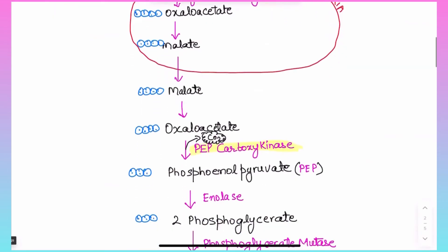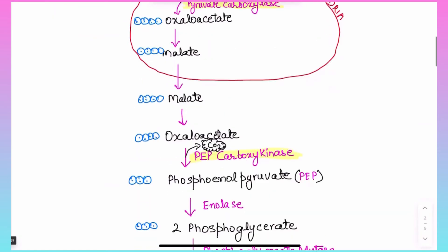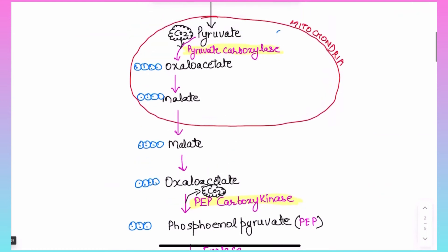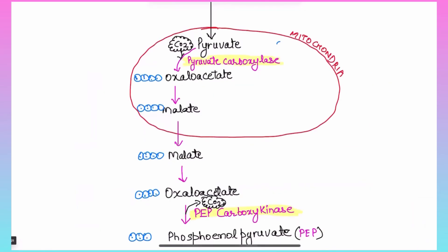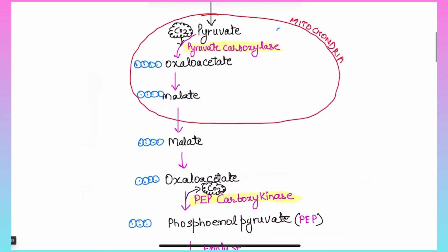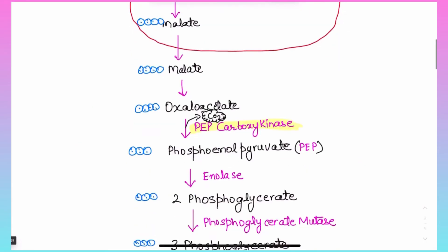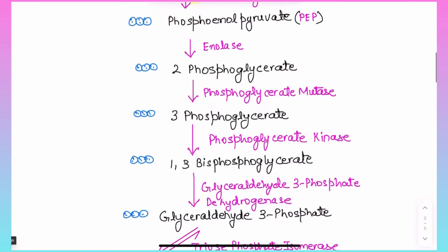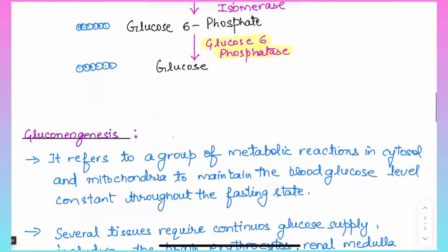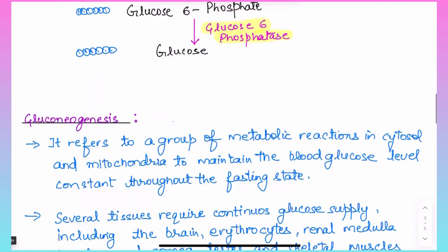The gluconeogenesis pathway requires two organelles — mitochondria as well as cytosol — whereas glycolysis takes place only in the cytosol.